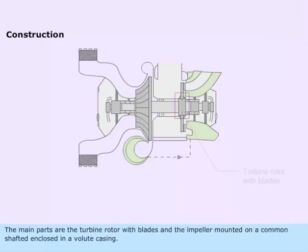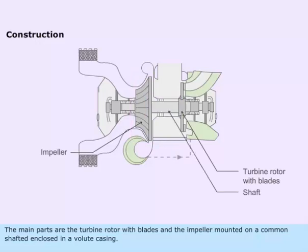The main parts are the turbine rotor with blades and the impeller mounted on a common shaft, enclosed in a volute casing.